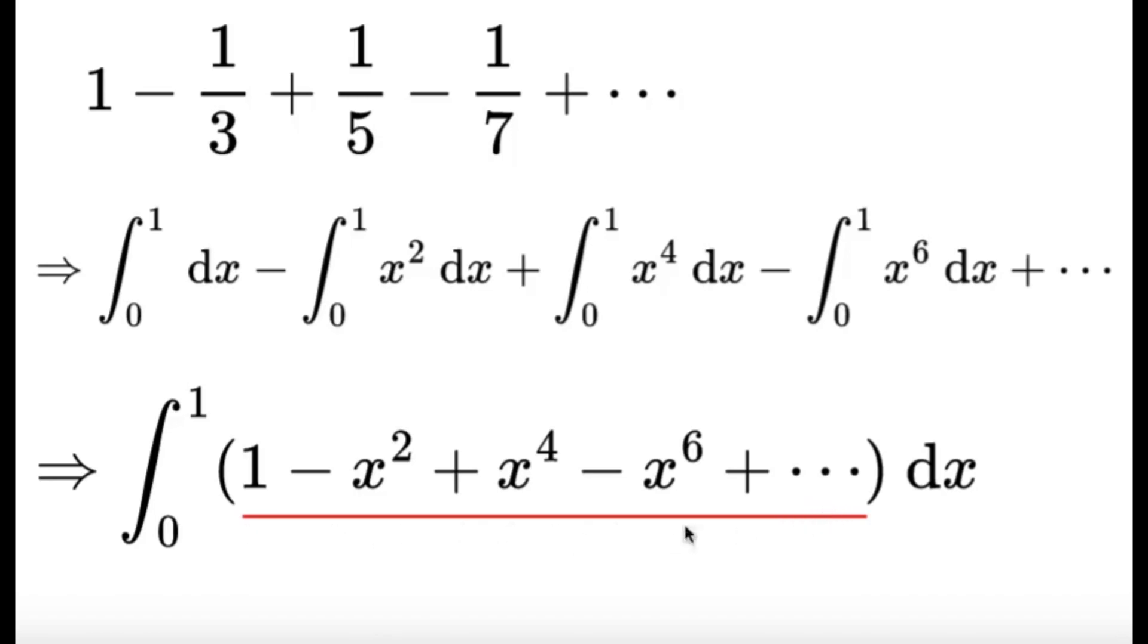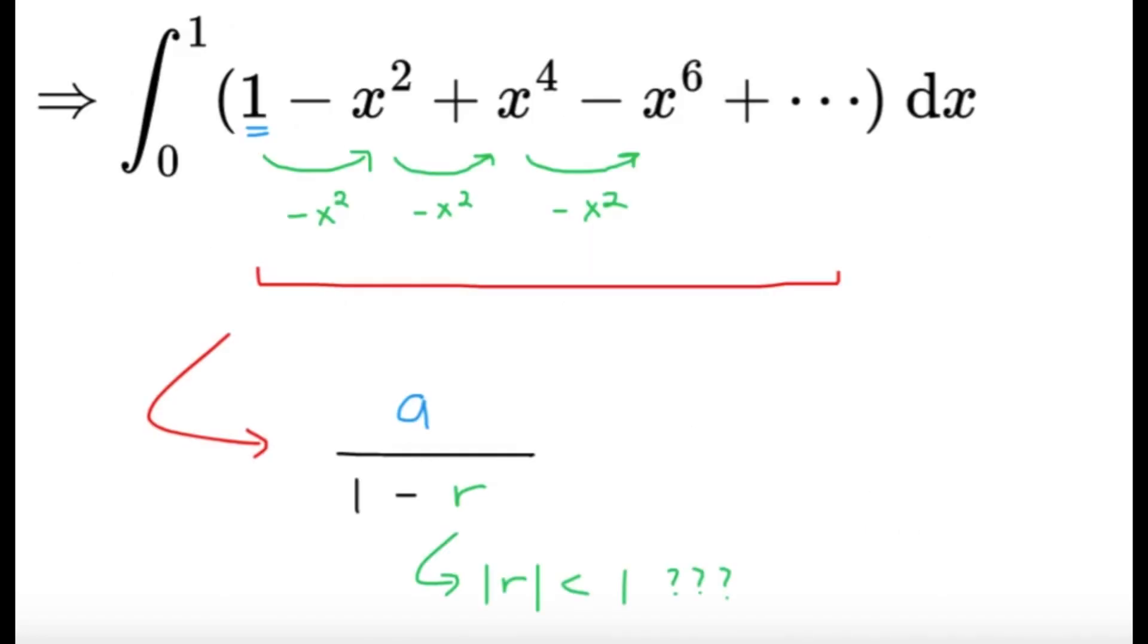Now, this red underlined sum, it's actually one of those infinite geometric sums. So we can treat it as a geometric series with first term, highlighted in blue, 1. And then the common ratio, it's going to be negative x². So take note that we multiply negative x² to get each succeeding term. So we use the formula a over 1 minus r. And for this formula, we must have the absolute value of r, or the common ratio, be less than 1.